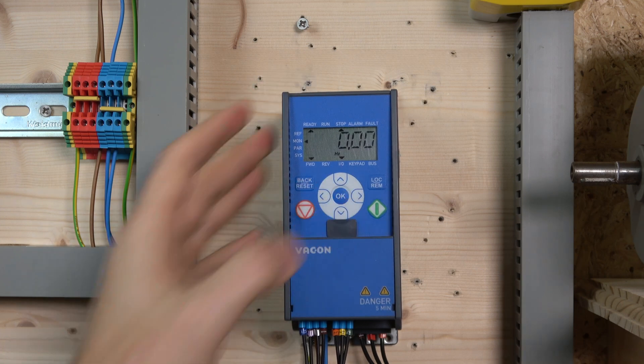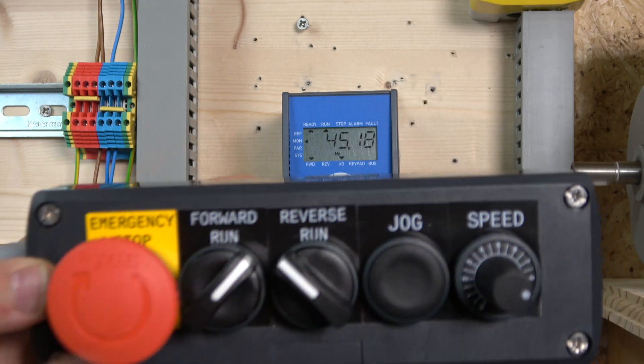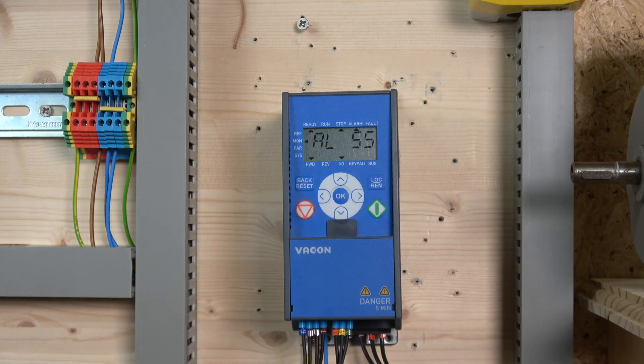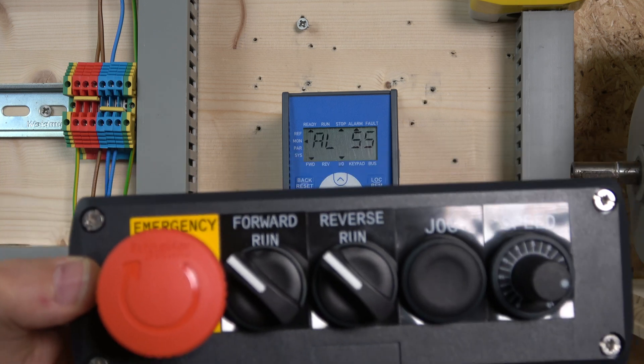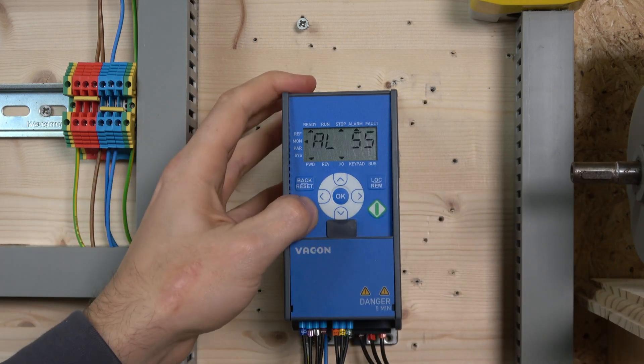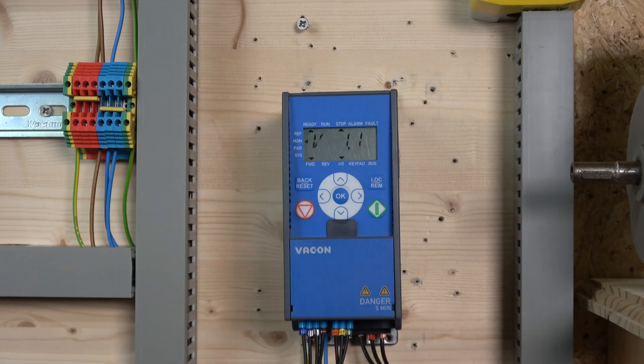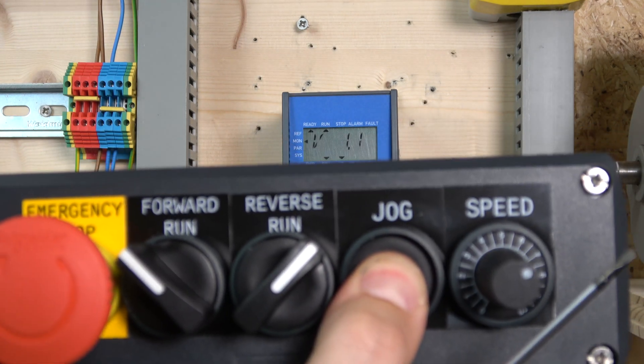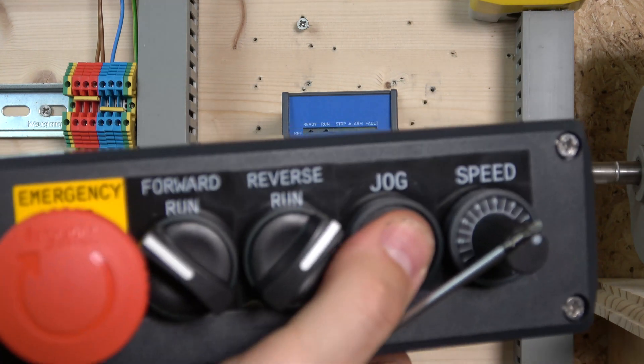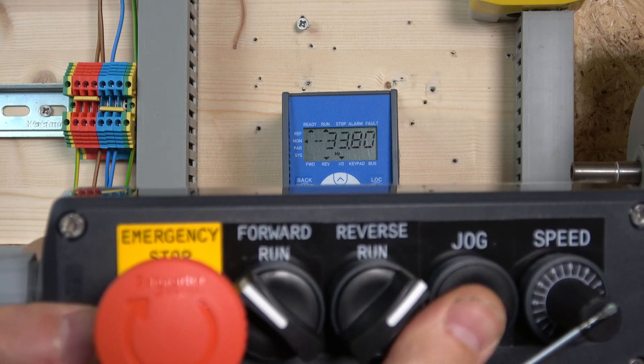Run forward - there you go. Adjust the speed. This is the first drive ever where alarm 55 comes up when you monitor. When you take it off, the alarm is still flashing. Click the stop button to remove the alarm. Then you can go in reverse. As soon as I push the jog, it will override any run signal and run at the preset frequency. That's it - two-wire control.